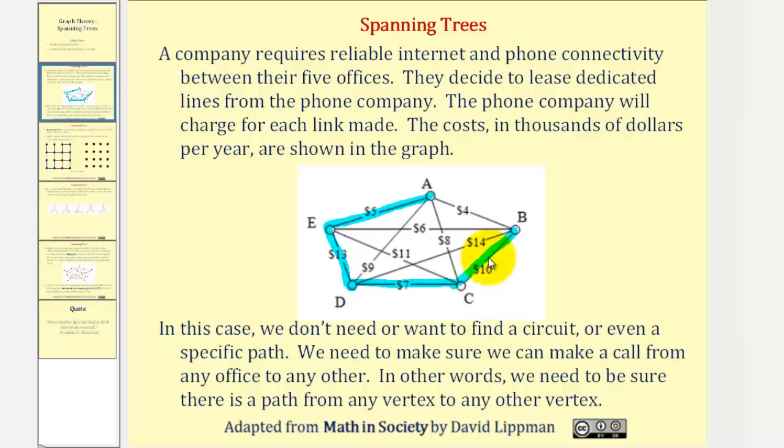Of course, there are many other possibilities. This would also be an example of a spanning tree. Once again, there's always a path from any vertex to any other vertex and no circuits are formed.